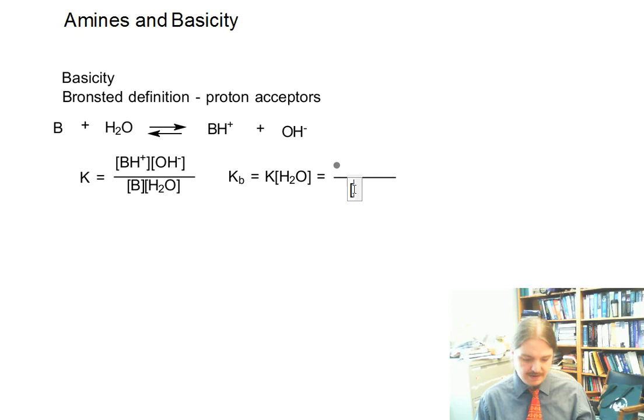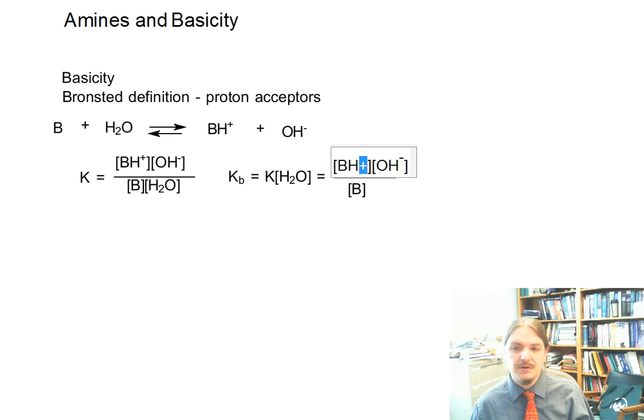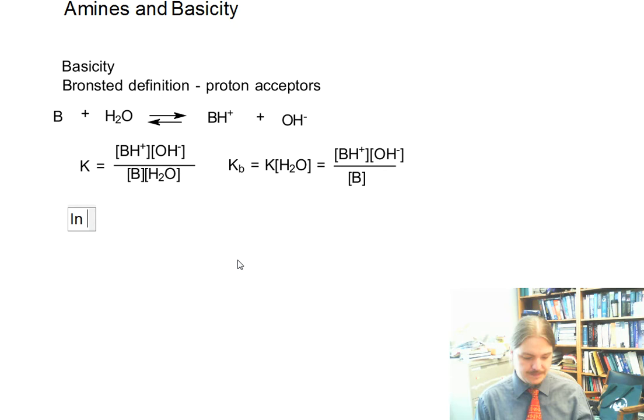And so we just have the concentrations of the BH+, or conjugate acid, hydroxide anion, and our original basic species B. This is KB. And the larger the value of KB is, the more the reaction favors the product and the stronger the base.